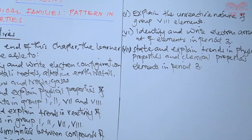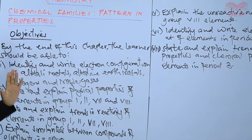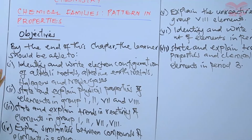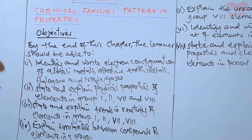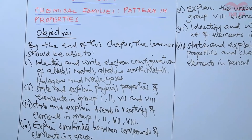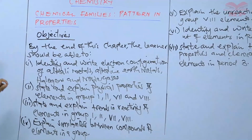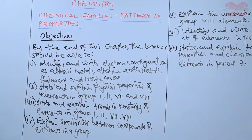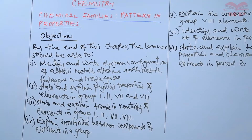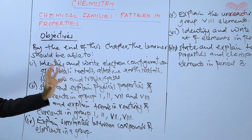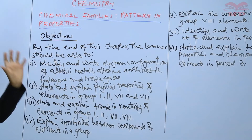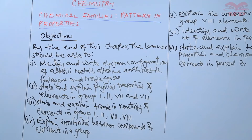So by the end of this chapter, the learner should be able to, one, identify and write electron configuration of alkali metals, alkaline earth metals, halogens, and noble gases. You should be able to write electron configuration of the elements in those chemical families as we are going to discuss later.